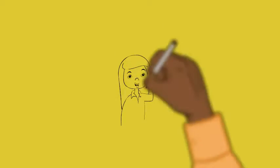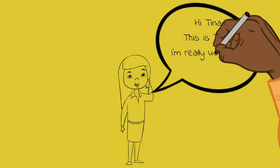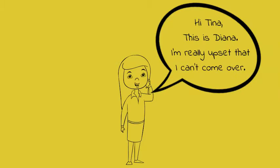Diana acts out her best choice. She decides to talk to someone about it. She calls her friend. 'Hi, Tina. This is Diana. I'm really upset that I can't come over.'